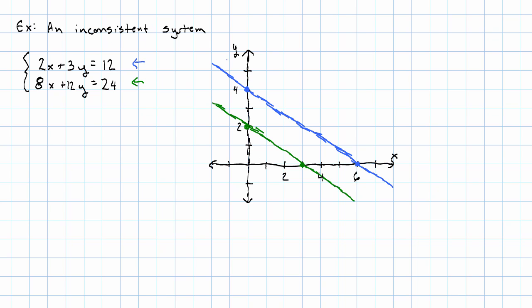Here we see two parallel lines. This system is inconsistent. It doesn't have a solution.